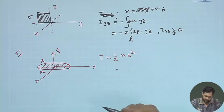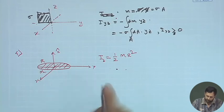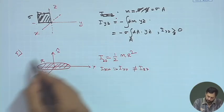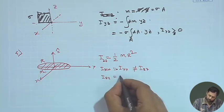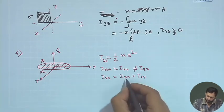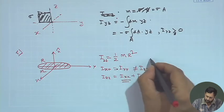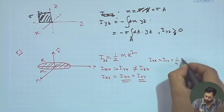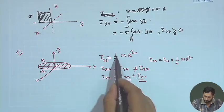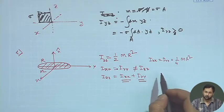As a side exercise, by the cylindrical symmetry of the problem, I_xx = I_yy. Using the perpendicular axis theorem for a 2D mass distribution, I_zz = I_xx + I_yy. Since I_zz = ½MR², we get I_xx = I_yy = ¼MR². You can verify this by direct integration.